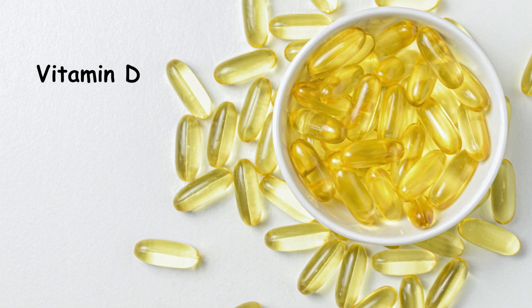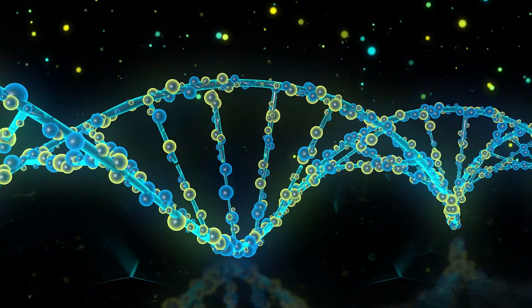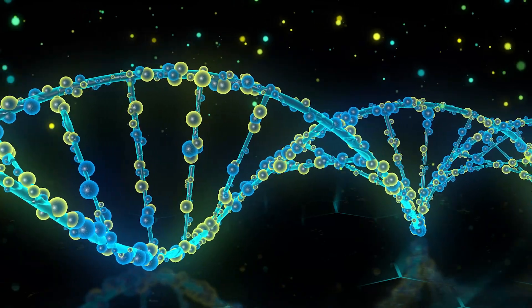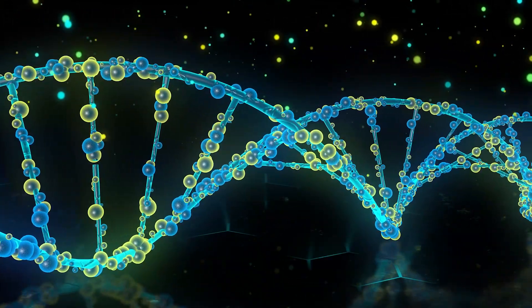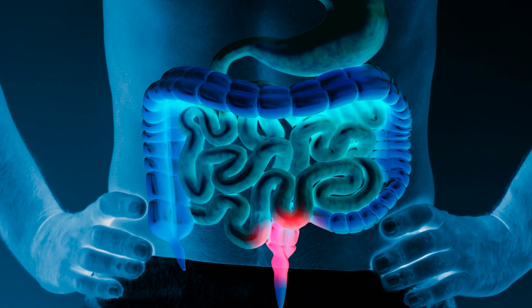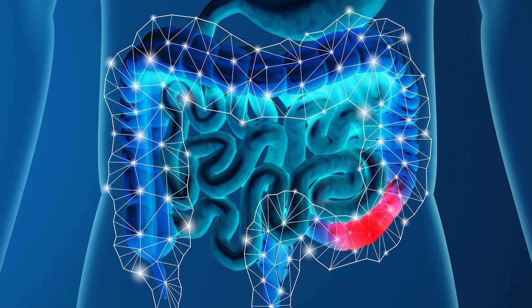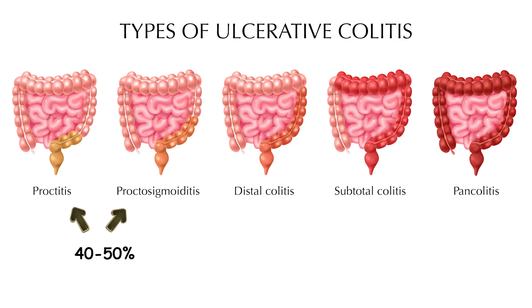In both diseases, inflammation likely emerges from the genetic predisposition of the host in the context of yet-to-be-defined environmental factors. Ulcerative colitis is a mucosal disease that usually involves the rectum and extends proximally to involve all or part of the colon. About 40-50% of patients have disease limited to the rectum and rectosigmoid, 30-40% have disease extending beyond the sigmoid but not involving the whole colon, and 20% have pancolitis.